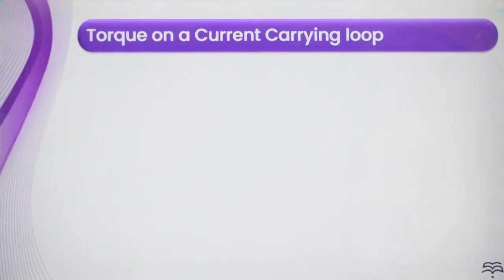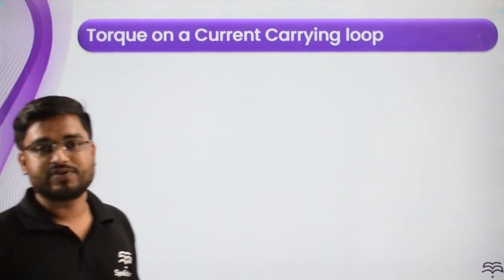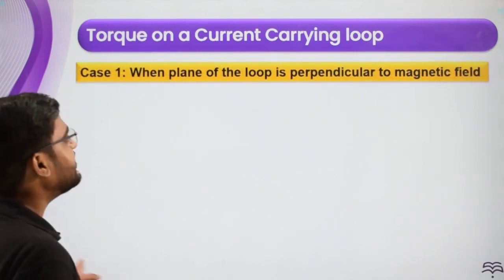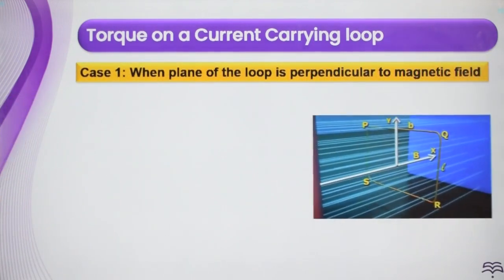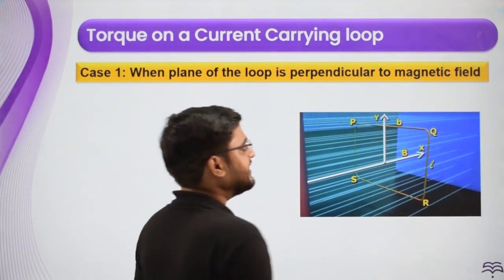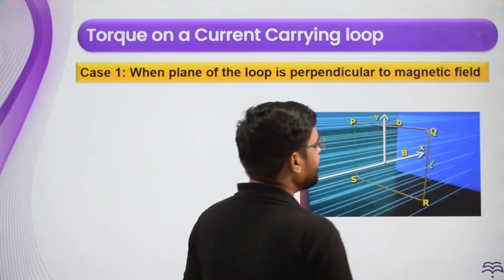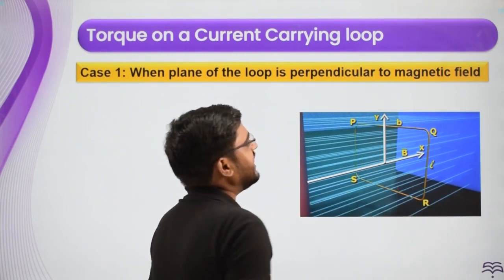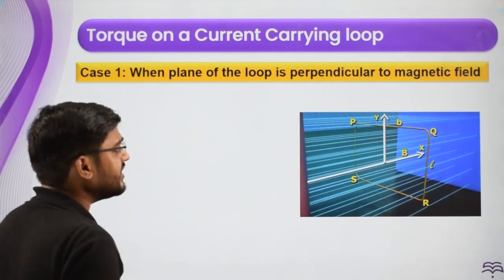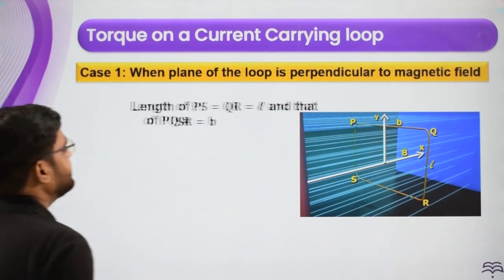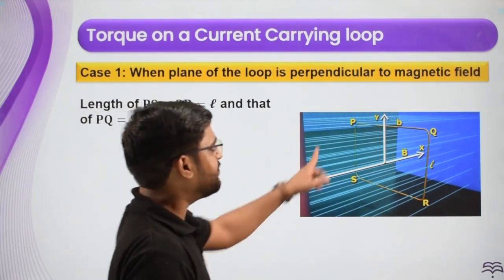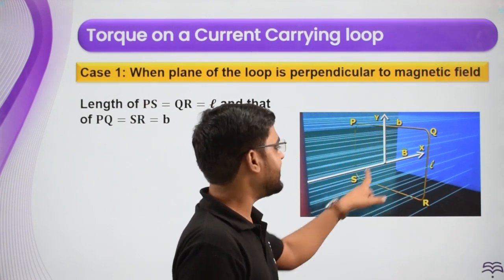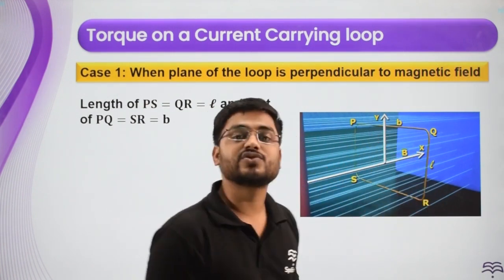Now let us discuss the torque on a current carrying loop. Here we have a current carrying loop, and case one is when the plane of the loop is perpendicular to the magnetic field. The direction of the magnetic field is that way and the plane PQRS is exactly perpendicular to it. The length of PQ and SR is b, and the length of PS and QR is L, as shown in the figure.